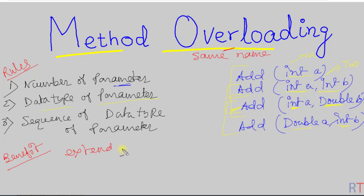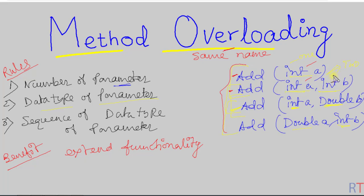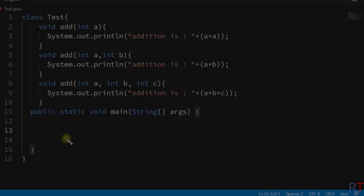The main benefit of overloading a method is that we can extend the functionality of that method. For example, we are extending the functionality of the 'add' method — it can add one integer to itself, or add two integers, or take an integer and a double and add those two numbers.